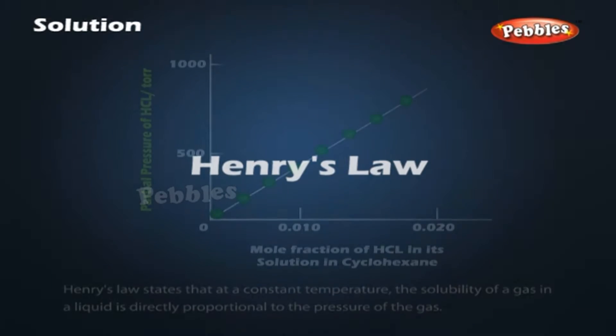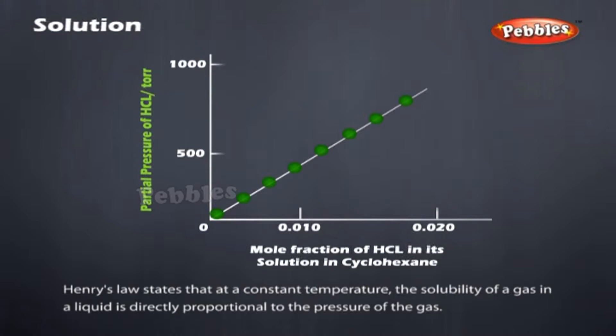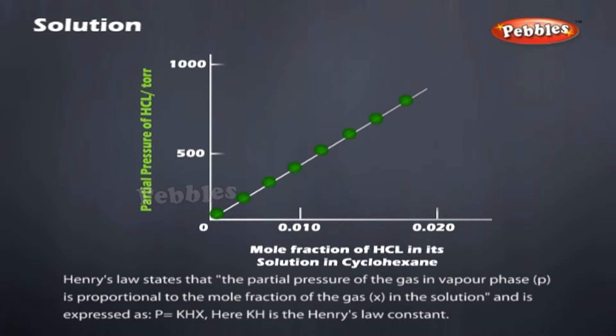Henry's Law states that at a constant temperature, the solubility of a gas in a liquid is directly proportional to the pressure of the gas. Henry's Law states that the partial pressure of the gas in the vapor phase, P, is proportional to the mole fraction of the gas, X, in the solution, and is expressed as P = KH · X. Here, KH is the Henry's Law constant.